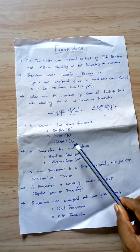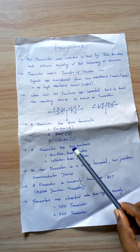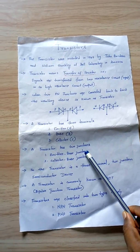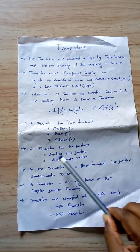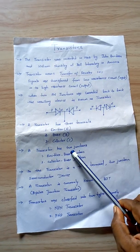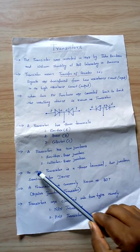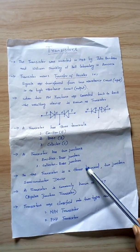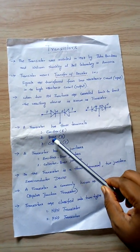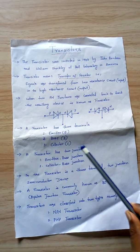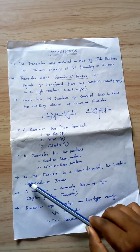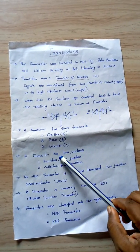A transistor has two junctions: one is the emitter-base junction and another one is the collector-base junction. From this it is very clear that a transistor is a three-terminal — emitter, base, collector — and two-junction semiconductor device.